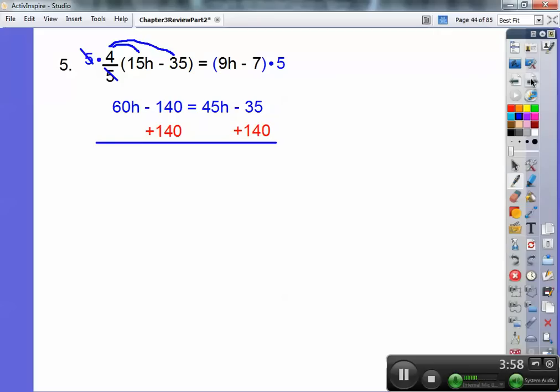We're going to get rid of the minus 140, and at the same time, watch this, we can do this at the same time. I'm subtracting out the 45h. If there's letters on the right, I get rid of them. If there's numbers on the left, I get rid of them. So when I subtract 60h minus 45h is 15h, the 140s cancel, the 45hs cancel, and then you get 105. When you divide by 15, you get 7.